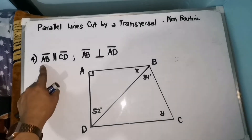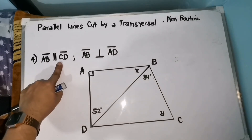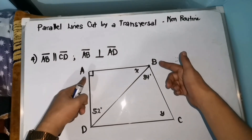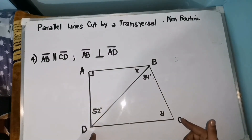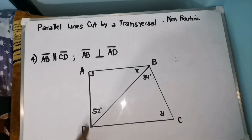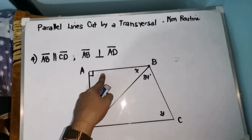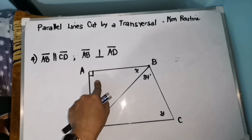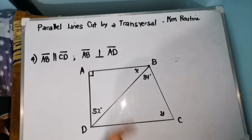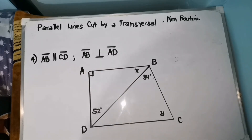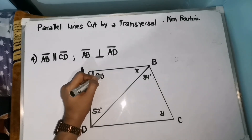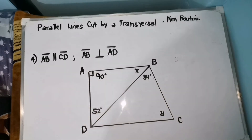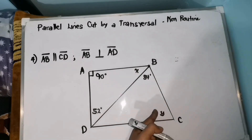Segment AB is parallel with segment CD. Another given is that AB is perpendicular with AD, so therefore it forms a right angle. We all know that a right angle measures exactly 90 degrees. So, how are we going to find the value of X and the value of Y?